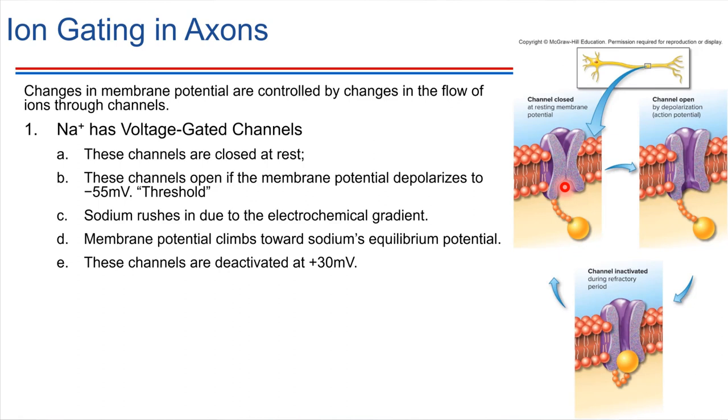So what we've just seen right here is a classic example of voltage gating. This channel is literally responding to changes in the voltage across the membrane. So it's a voltage-gated ion channel.